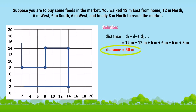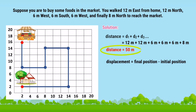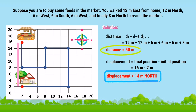Now what about your displacement? You simply subtract your final position by your initial position. Based on the illustration plotted on the graph, your final position points to 16 meters and your initial position begins at 2 meters. Therefore, using the formula displacement equals final position minus initial position, it will be 16 meters minus 2 meters equals 14 meters. If you draw a line from your house to the market, the direction is going north. Thus, your displacement is 14 meters north.